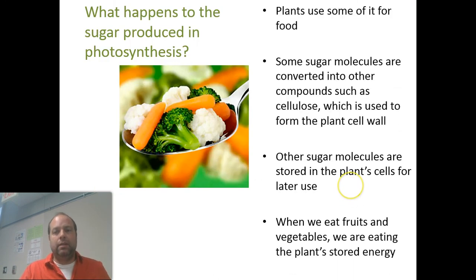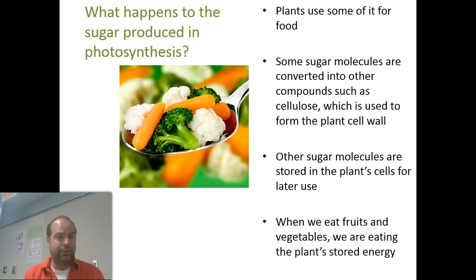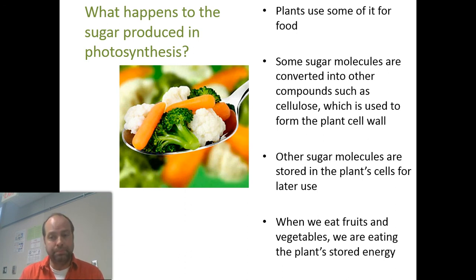What happens to the food that the plant produces? Some of it is used for the plant's own energy. Plants are alive, so they need energy — and a lot of students forget this. Plants also have mitochondria, just like you and I, though we have more mitochondria than plants. A lot of their food also goes into making their cell wall by changing the food into cellulose.